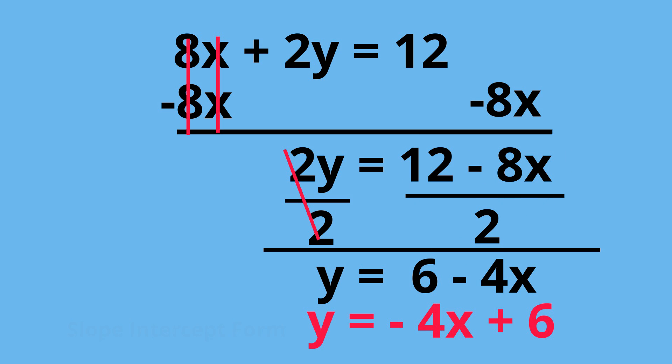If you'd like, you can rearrange it to look like Y equals negative 4X plus 6. So negative 4 is the slope and 6 is the Y-intercept. I hope that was helpful.